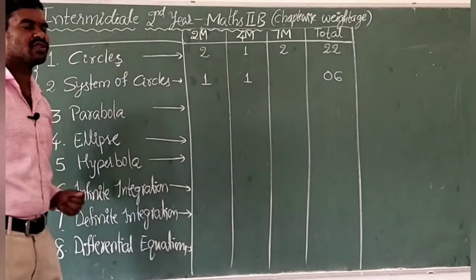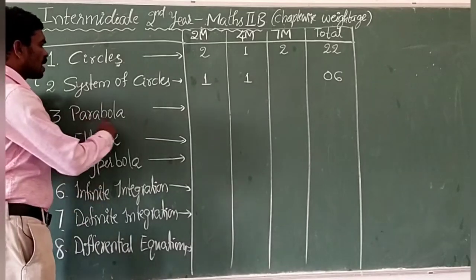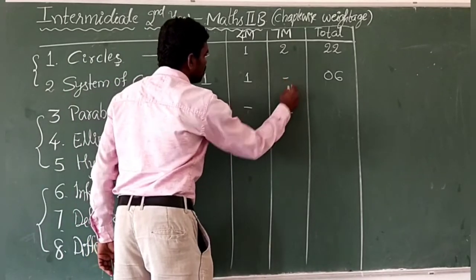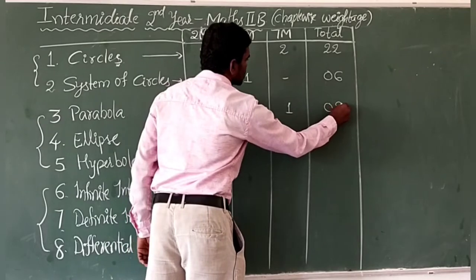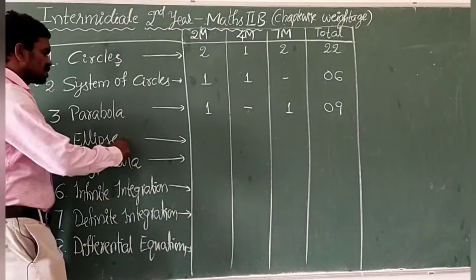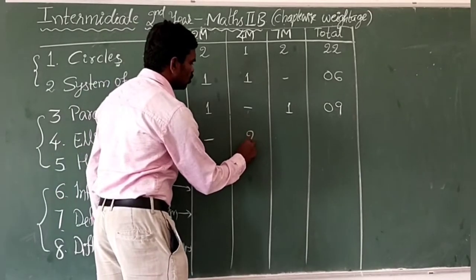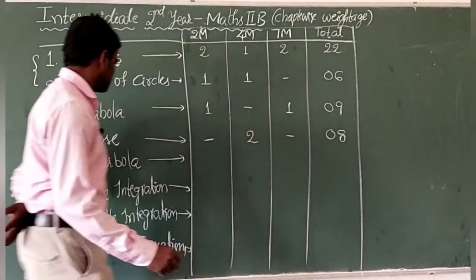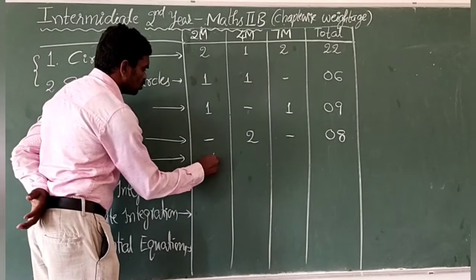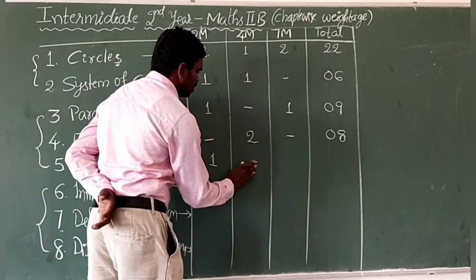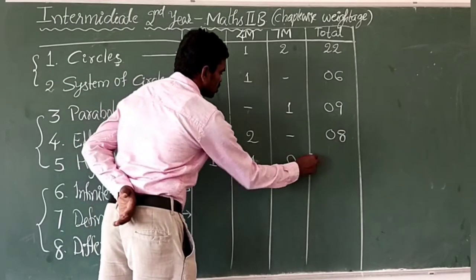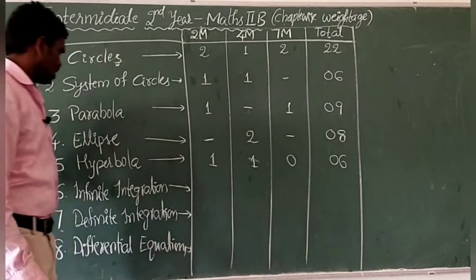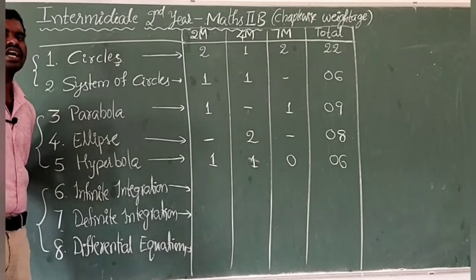From coordinate geometry overall we can get 28 marks. Next is Parabola: one 2-mark question and one 7-mark question — no 4-mark questions — so 2 plus 7 = 9 marks. Ellipse has no 2-mark question but two 4-mark questions, so 2 fours = 8 marks. Hyperbola has one 2-mark question and one 4-mark question, so 2 plus 4 = 6 marks.